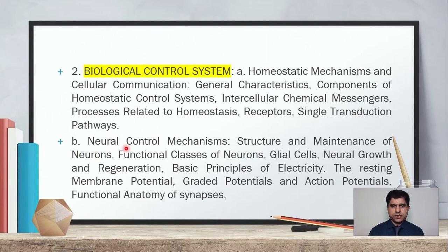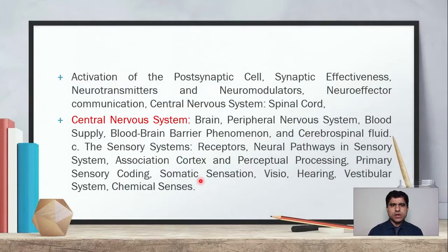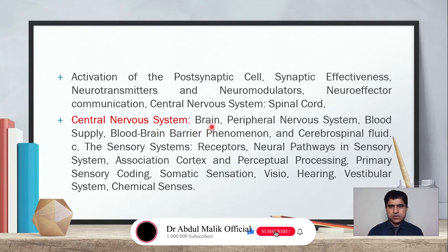Subheading B covers neural control mechanisms, including structure and maintenance of neurons, functional classes of neurons, glial cells, neural growth and regeneration, basic principles of electricity and action potential, resting membrane potential, graded potentials and action potentials. Functional anatomy of synapses, activation of post-synaptic cell, synaptic effectiveness, neurotransmitters and neuromodulators, neuro-effector communication, central nervous system and spinal cord, brain, peripheral nervous system, blood supply, blood-brain barrier, and cerebrospinal fluid will be discussed.